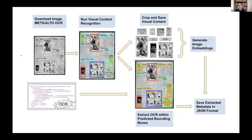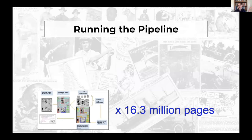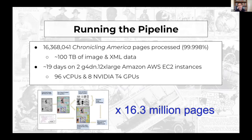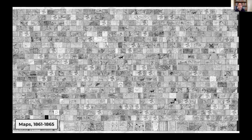I was able to run this pipeline at scale across 16.3 million pages — about 99.998% of available pages — amounting to about 100 terabytes of image and XML data. It took quite a bit of compute but we got it done, and it's fully hosted. One of my favorite things is to visualize the dataset — here's a quick visualization showing all the maps from 1861 to 1865, which are almost all maps of the American Civil War.